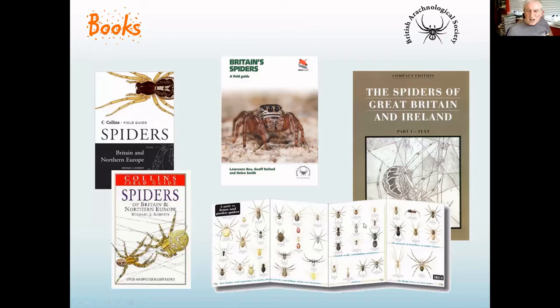Before I move on, there's the FSC fold-out chart — about three pounds — which is useful, but it has its drawbacks. You can't really tell the scale of stuff from it. It also suffers from what I call the Chinnery effect — it puts a name to some spiders on that chart but doesn't tell you there's another one that looks extremely similar but isn't shown. So there's some caution needed in using that FSC fold-out chart.